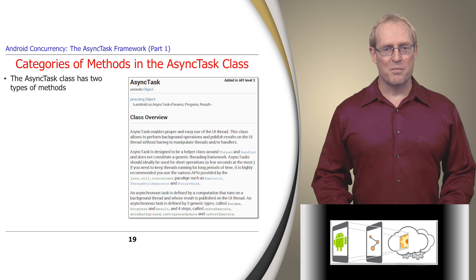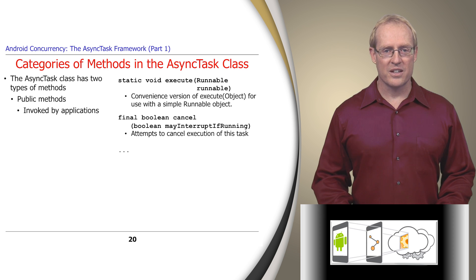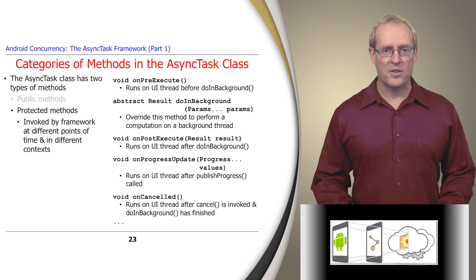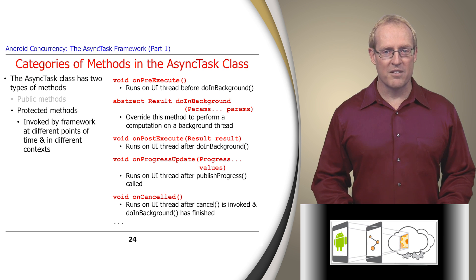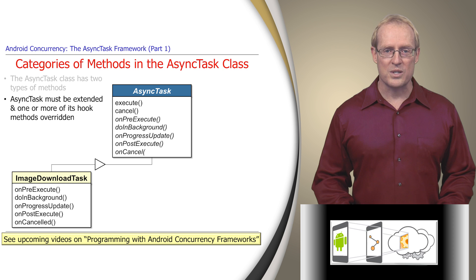There are two main categories of methods in the async task class that provides the facade for the async task framework. The first type are public methods invoked by applications — for example, the execute method runs a task with the specified parameters, while the cancel method attempts to stop the execution of a task. The second type are protected hook methods such as onPreExecute, doInBackground, onProgressUpdate, onPostExecute, and onCancel, which are invoked by the async task framework at different points in time and in different contexts, such as in the user interface thread or one or more background threads. Framework users must extend the async task base class and override one or more of its hook methods.